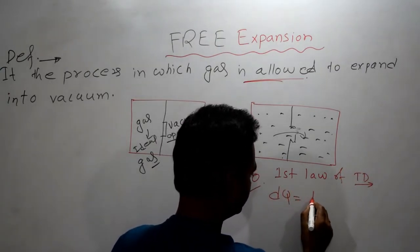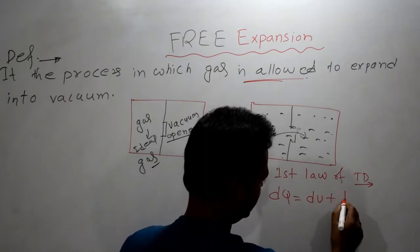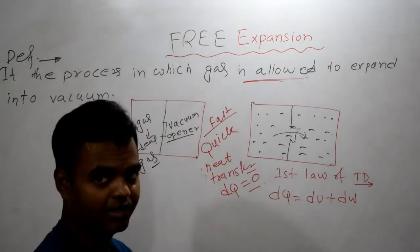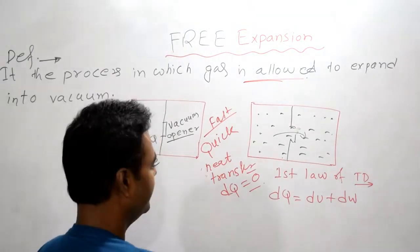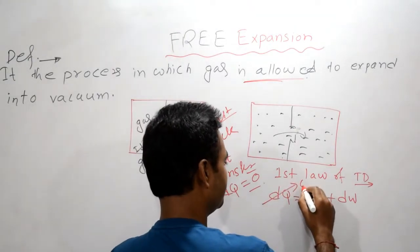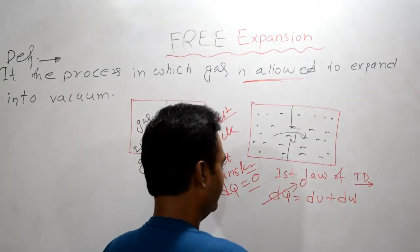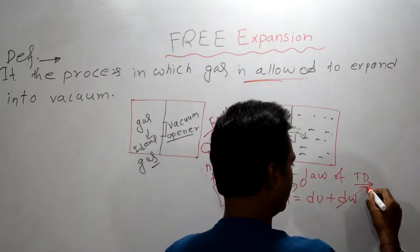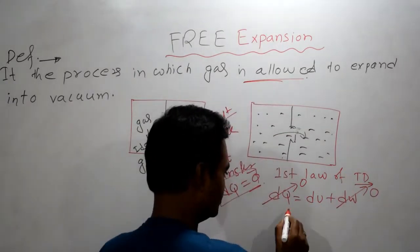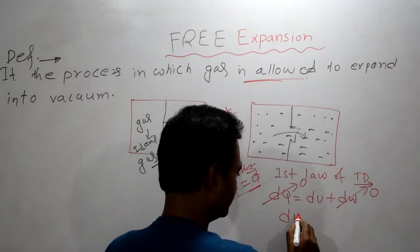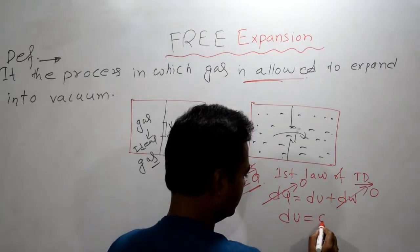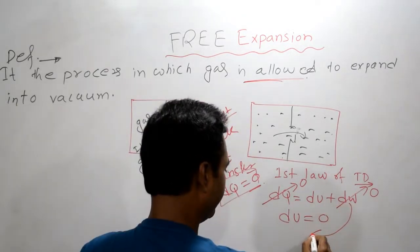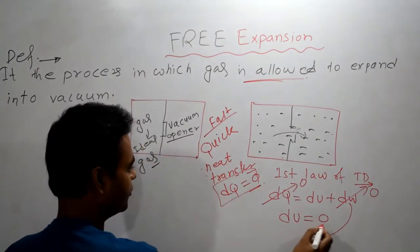From the first law of thermodynamics: dQ = dU + dW. Since dQ is zero and there is no work transfer either, dW is also zero, so dU is equal to zero. We have now obtained that the change in internal energy is zero.